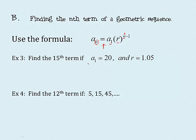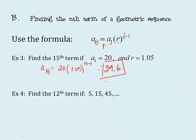On number 3, find the 15th term if a sub 1 is 20 and r is 1.05. So a sub 15 equals a sub 1, which is 20, times r, 1.05, to the n minus 1. Well, n was 15, so I raise it to the 14th power. Be careful in your calculators: 20 times 1.05 raised to the 14th power. And I get 39.6, rounded to the nearest tenth. That would be the 15th term of the sequence.